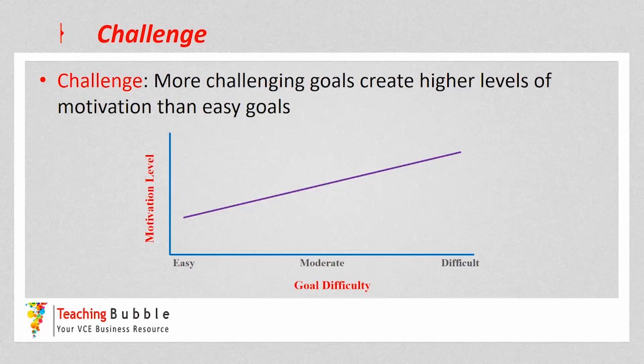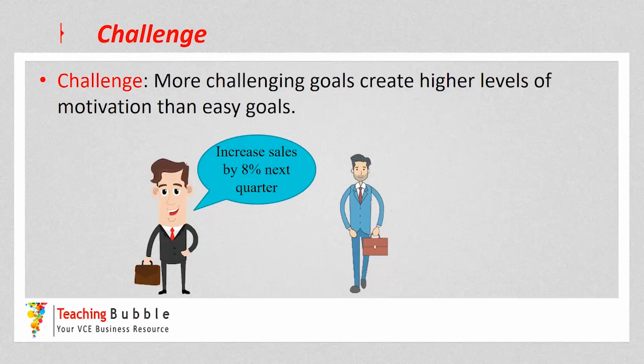The next attribute is challenge. Lock and Latham found there was a direct correlation between how challenging a goal was and how much motivation it actually created. More challenging goals create higher levels of motivation than easier goals. The harder the goal, the more motivation that's created, because employees are looking to challenge themselves and see how good they are — they're motivated towards the achievement of a challenging goal.